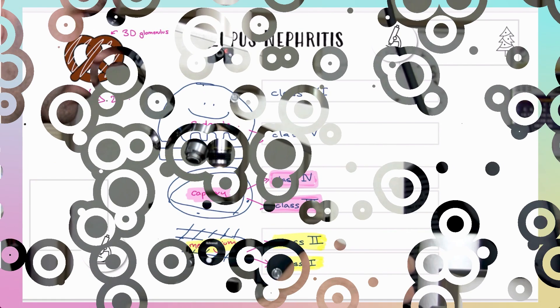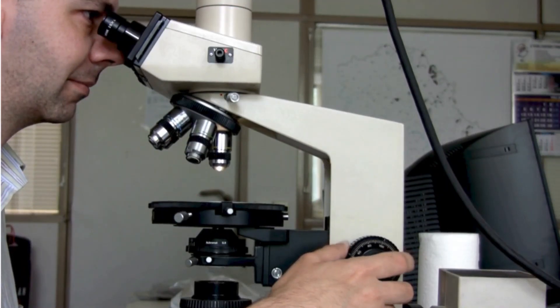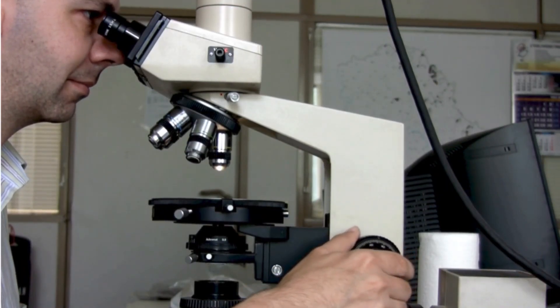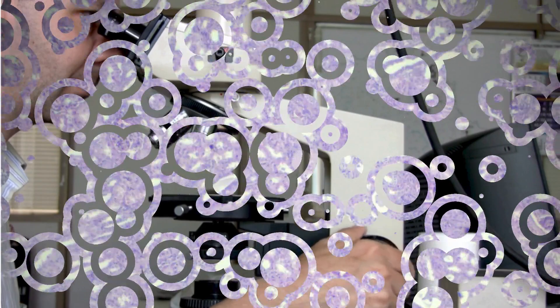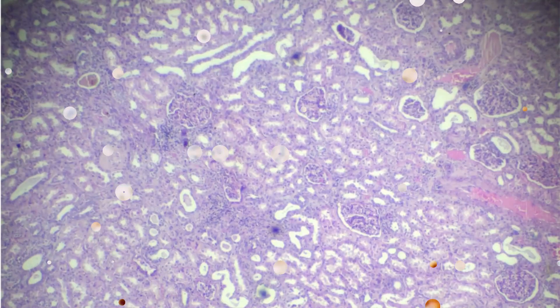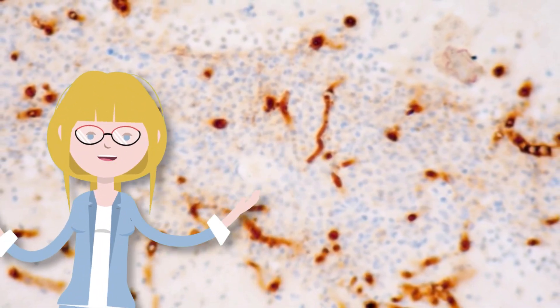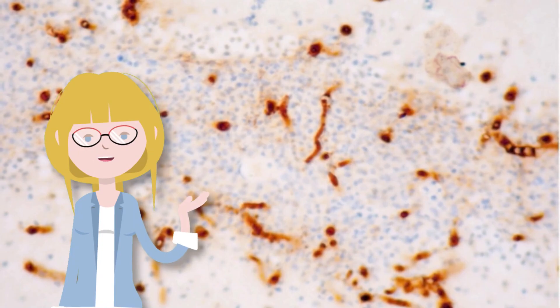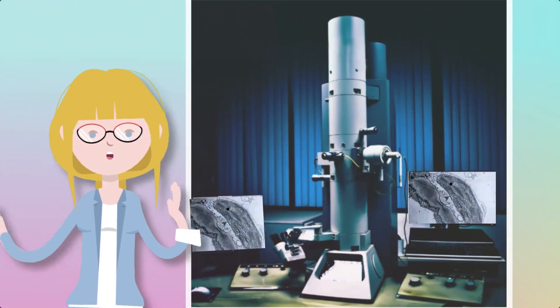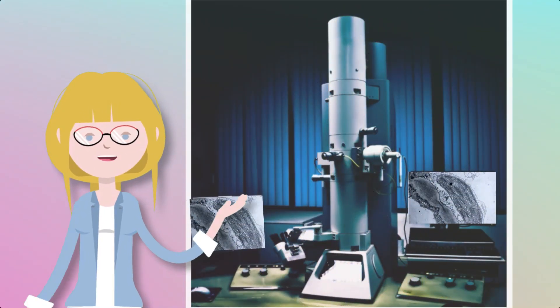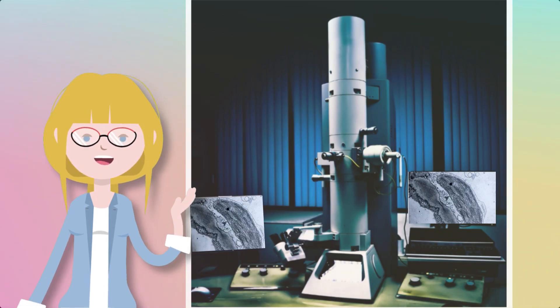But now we're going to superimpose some more details onto this diagram. Because when we do a renal biopsy, we do a couple of things. First we look at the tissue under the light microscope and see what histological patterns are there. We then stain the biopsy to look for antibodies and complement. This can be done either with immunohistochemistry or immunofluorescence.